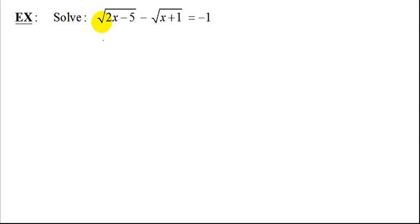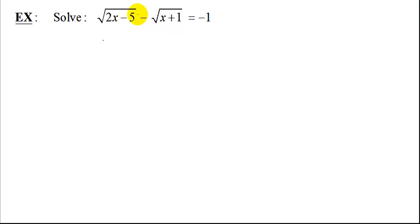In this example, we're going to solve the equation: the square root of 2x minus 5, minus the square root of x plus 1, equals negative 1. What type of equation is it? If you notice, on the left-hand side I have two square roots. So this is a two-radical equation, because square roots are radicals.